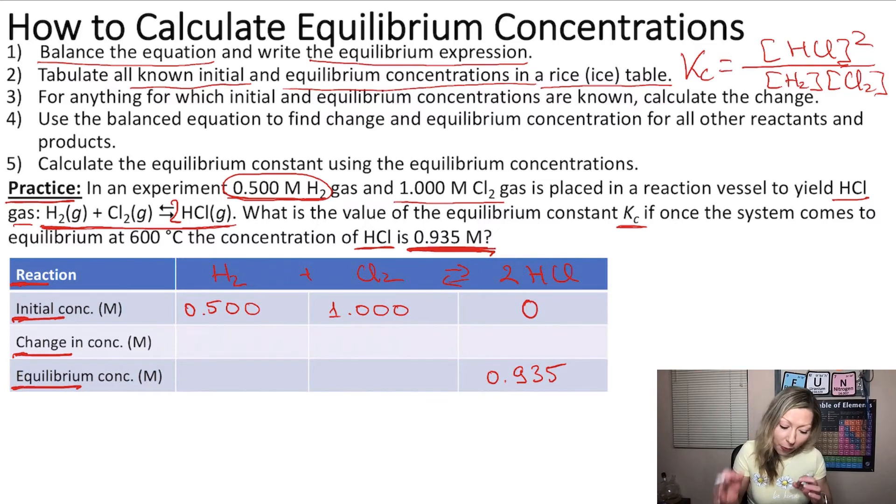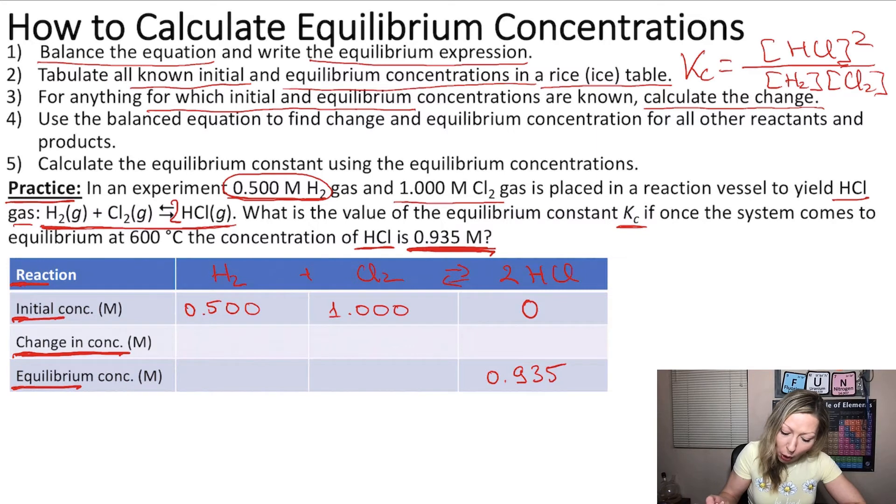Now for anything for which we know the initial and the equilibrium concentrations, we have to calculate the change. That is this part right here. So we know the equilibrium and the initial concentration for the product, which is HCl. And we know that the change there was, well, it went from 0 to 0.935, was plus 0.935 mols per liter.